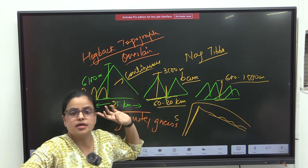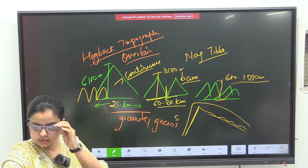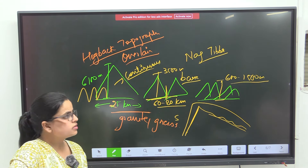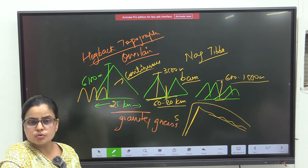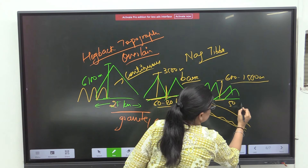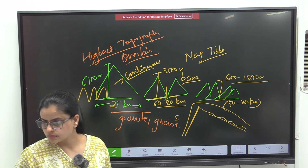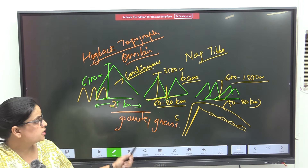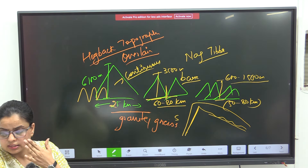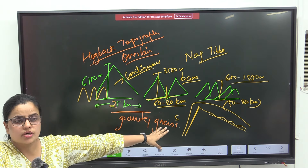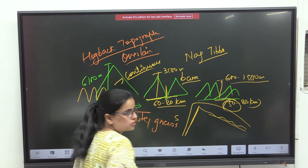The Greater Himalayas are around 6000 meters, the Middle Himalayas around 3500 meters in height, and the Shivaliks are only 600 to 1500 meters. Width is around 50 to 80 kilometers. The average width is around 50 kilometers — remember this number.